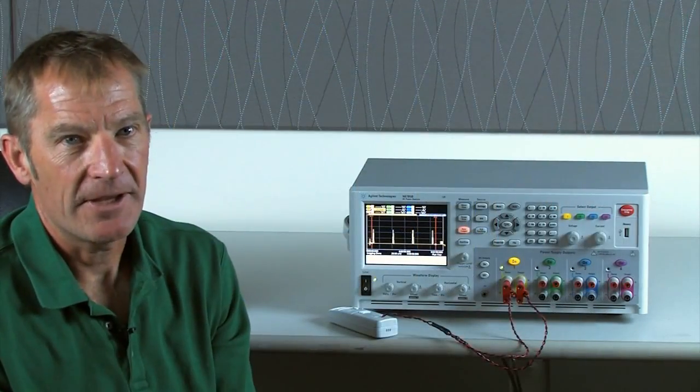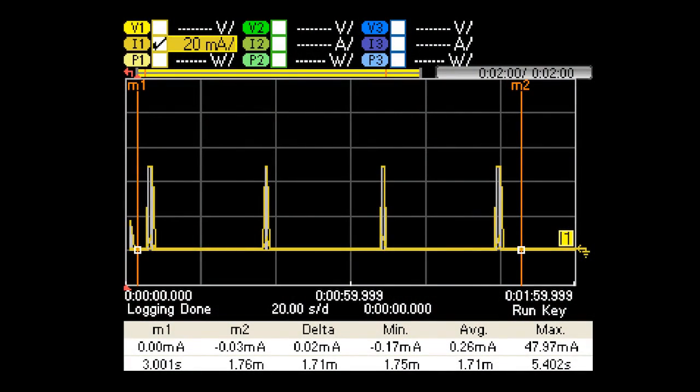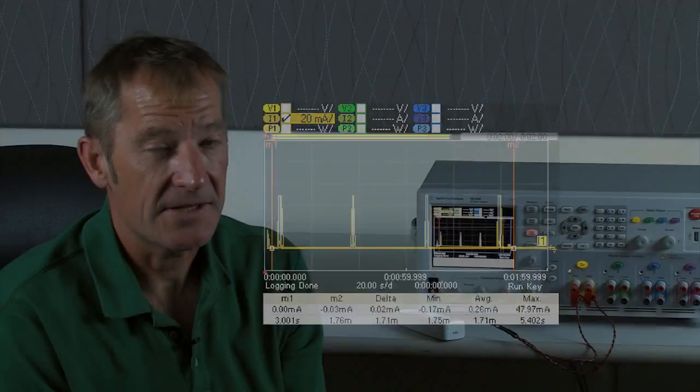Now our data logging is complete. We can see that the wireless transmitter transmits every 30 seconds, and over the two minute period it uses an average of about 260 microamps.